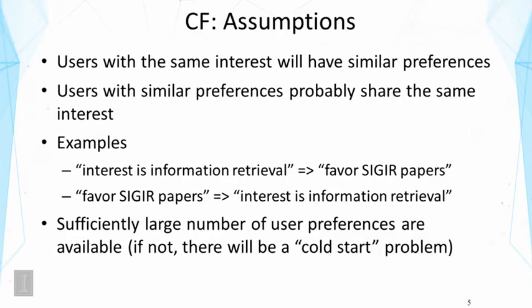This approach works well under the following assumptions. First, users with the same interest will have similar preferences. Second, users with similar preferences probably share the same interest. For example, if a user's interest is in information retrieval, we can infer they probably favor SIGIR papers. Those interested in IR research probably all favor SIGIR papers — that's the assumption we make. Conversely, if we see people favor SIGIR papers, we can infer their interest is probably in information retrieval.